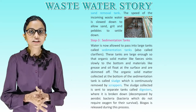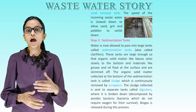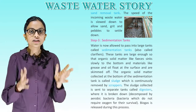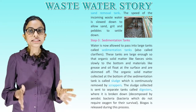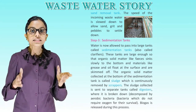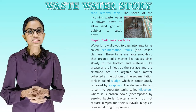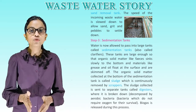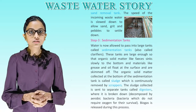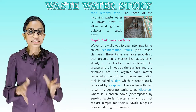Step 3 — Sedimentation Tanks: water is now allowed to pass into large tanks called sedimentation tanks, also called clarifiers. These tanks are large enough so that organic solid matter like feces sinks slowly to the bottom, and materials like grease and oil float at the surface and are skimmed off. The organic solid matter collected at the bottom of the sedimentation tank is called sludge.